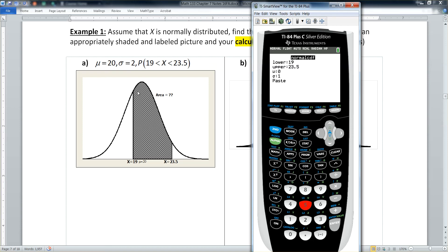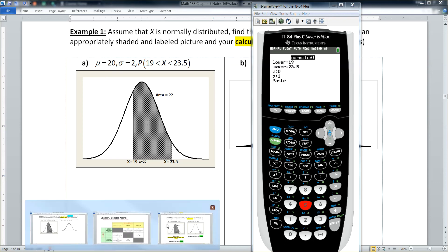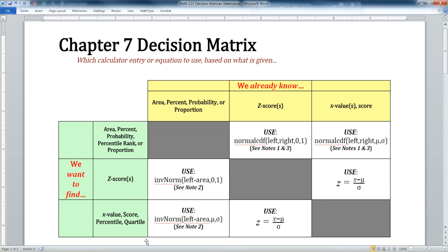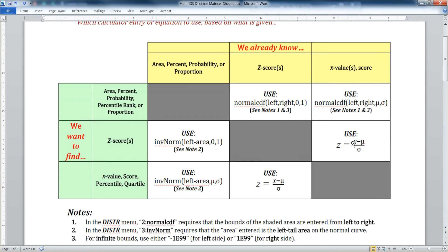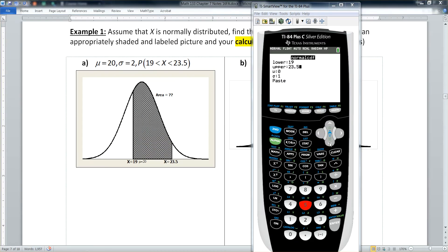Right. It literally wants, give me the left hand edge, the lower edge, give me the right hand edge, the upper edge, and I will find you the area in between those two. And that's what the decision matrix is telling us to do. It says left comma right mu sigma. Left is the lower bound. Right is the upper bound. Right. So I want to tell it my mu, which was 20. I want to tell it my sigma, which is two. Then I go to paste it.